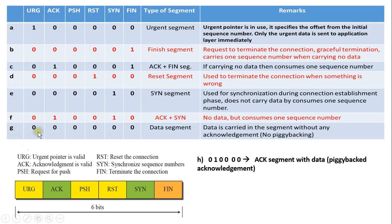The next bit pattern is 0,0,0,0,0,0 — none of the flags are set. So the type of segment is a data segment. This data segment does not carry any acknowledgement; no piggybacking is used. The segment carries only the information, no acknowledgement. When acknowledgement is carried along with data it is called a piggybacked acknowledgement, but in this data segment only data is carried — no acknowledgements — so no piggybacking is used.